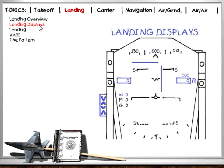You'll use a number of displays for landing, including the altitude and airspeed indicator, the instrument landing system or ILS, the vertical speed readout, and the angle of attack readout and indexer.